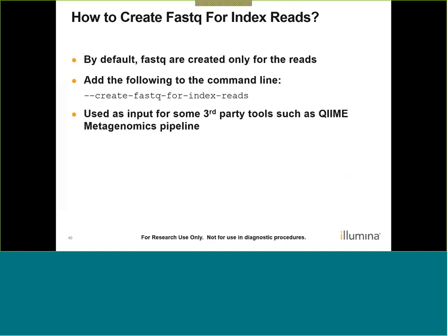BCL to FASTQ also has the ability to create FASTQ files for index reads. By default, FASTQ files are only created for sequencing reads. If you include the command --create-fastq-for-index-reads, it will create one FASTQ file per index read performed. For a dual index run with this option enabled, two additional FASTQ files are generated: I1 (first index read) and I2 (second index read), listed in the file names instead of R1 and R2. This is useful as input for third-party tools such as QIIME and the MiGNUMX pipeline.